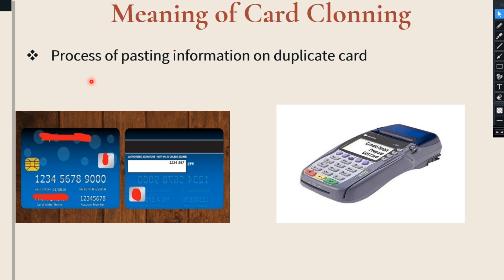Through card skimming, they collect the information and put that collected information on a duplicate card. After the procedure of card cloning, the fraudsters will get a duplicate card, and that duplicate card will be used to steal the money from the victim's account. The fraudsters will use these cloned cards at various ATM machines and point of sale devices to withdraw the money from the bank account of the customers.